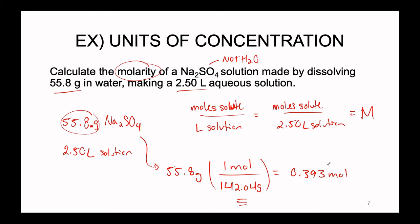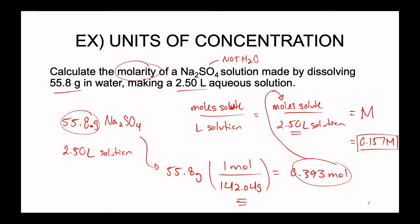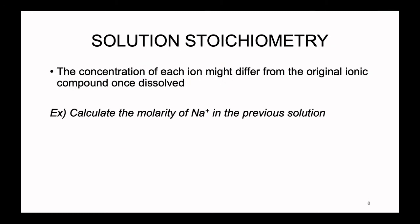Now we insert this into our molarity equation: 0.393 moles divided by 2.50 liters gives us 0.157 M — 0.157 moles of sodium sulfate per liter of solution. But sometimes we want to find the concentration of a particular ion specifically. In that case we need to use stoichiometry, because the concentration of each individual ion can differ from the original ionic compound once it has dissolved.